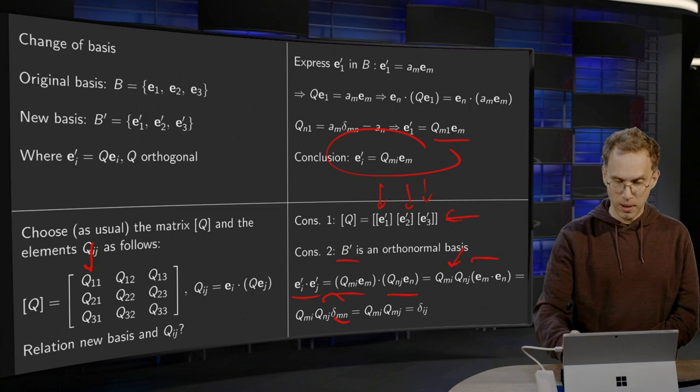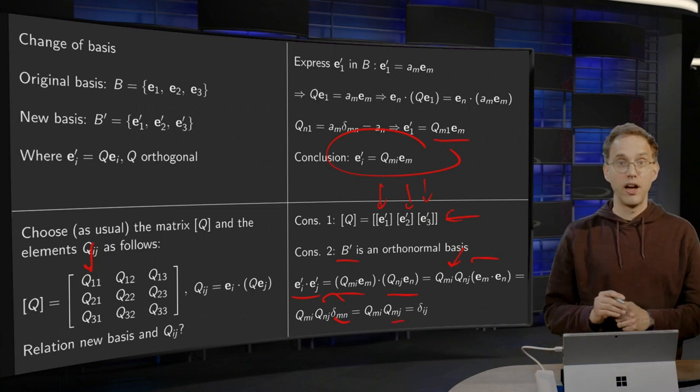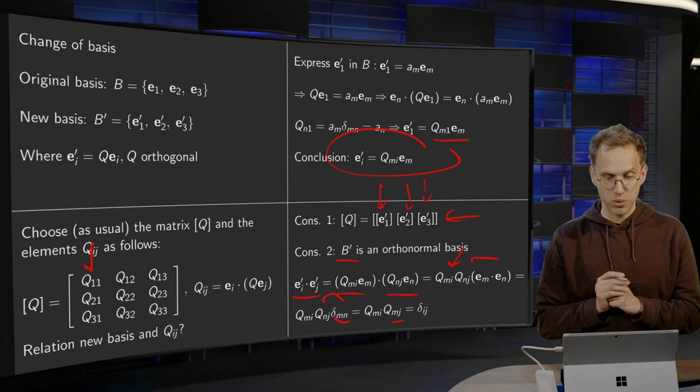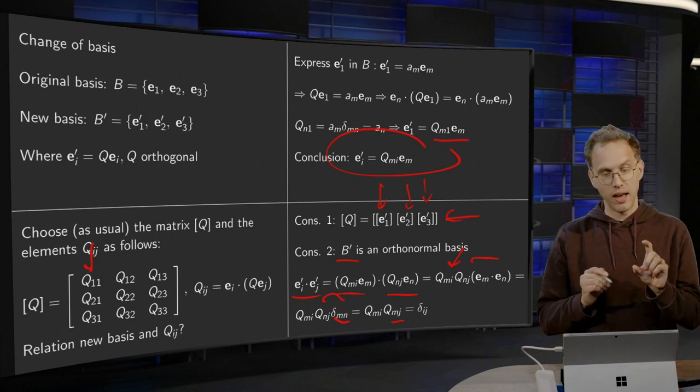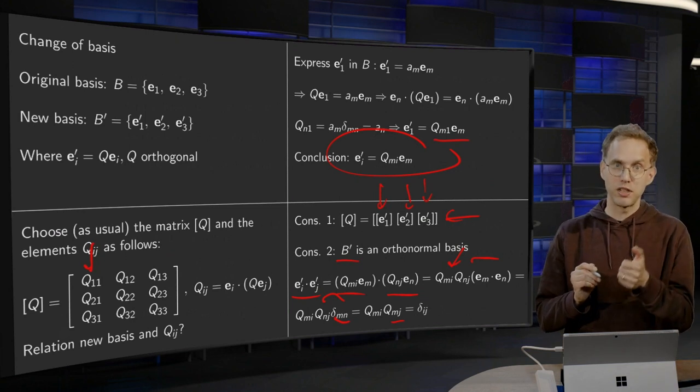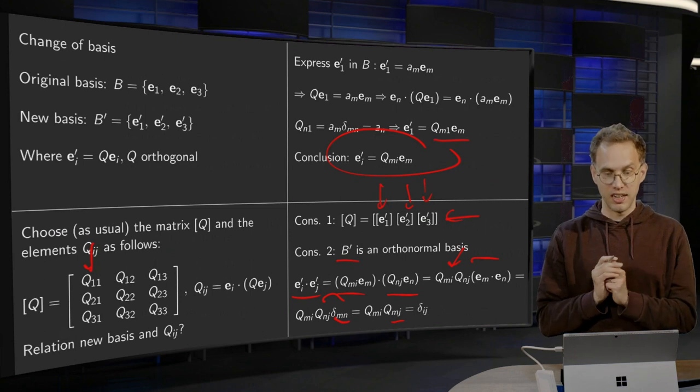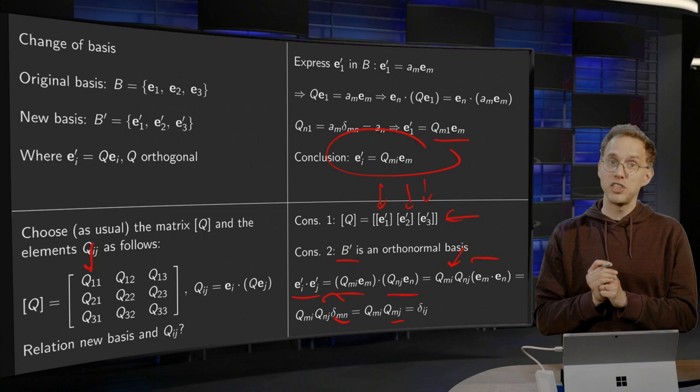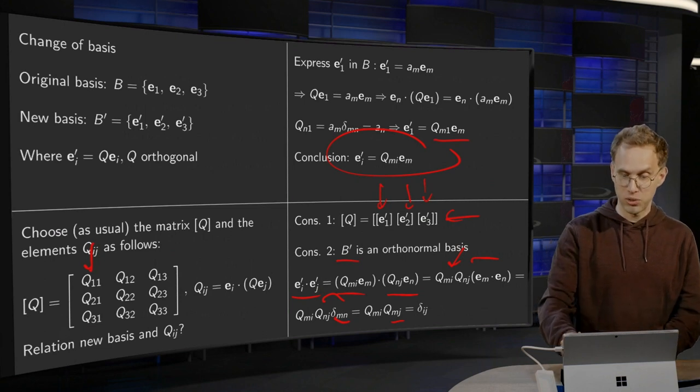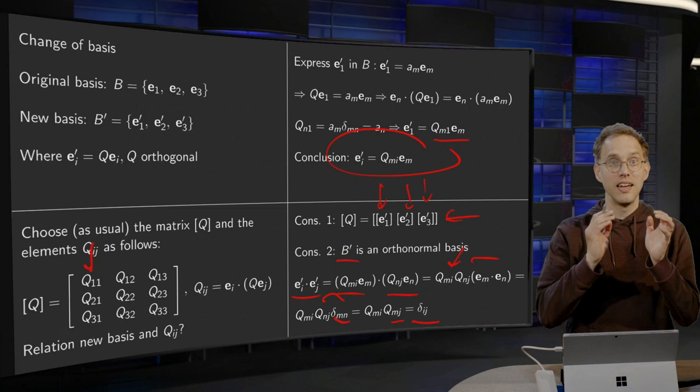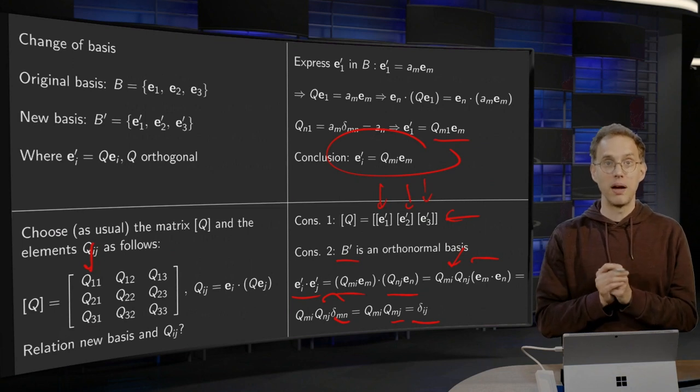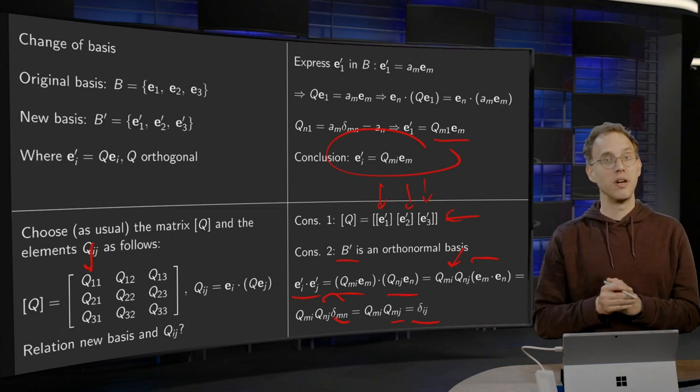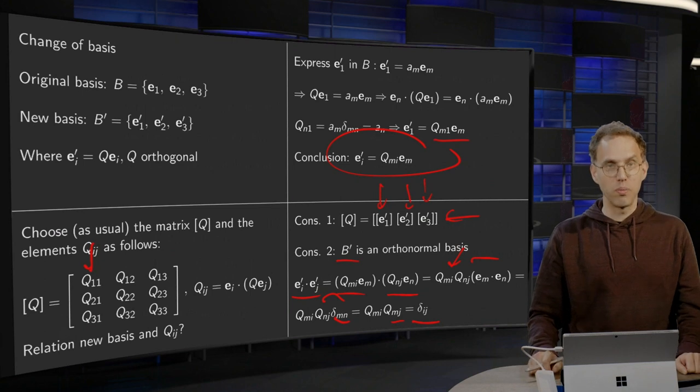Then performing the sum over N over here, you get QMI*QMJ. And because we have an orthogonal tensor, QMI = Q^T_IM. So what it reads over here is Q^T*Q, which gives you the identity matrix or delta_IJ. So you see indeed EI'·EJ' = delta_IJ.